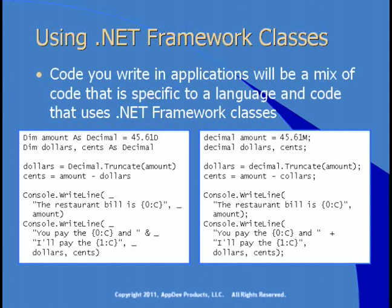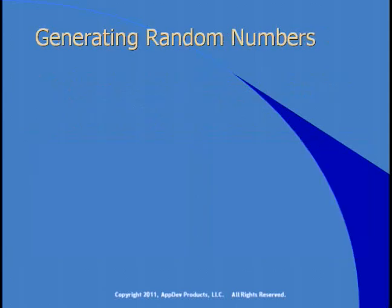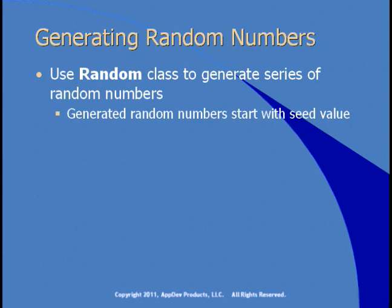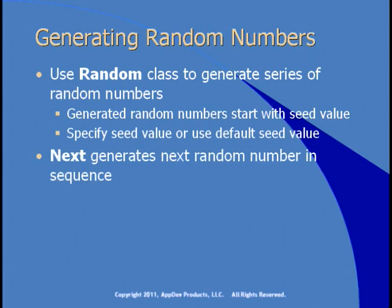So you can see that this code is pretty similar between Visual Basic and C#, because all of the work being done in this code is using .NET Framework classes. Let's take a look at some .NET Framework classes and see how we can perform some common tasks. One task you might need to do is generate random numbers, and for that you can use the Random class from the .NET Framework. Generated random numbers can start with a seed value — you can use the default seed value or specify your own. The Next method of the Random class will generate the next random number in a sequence.